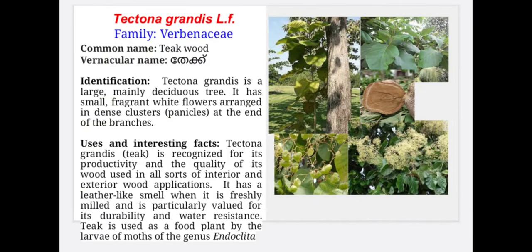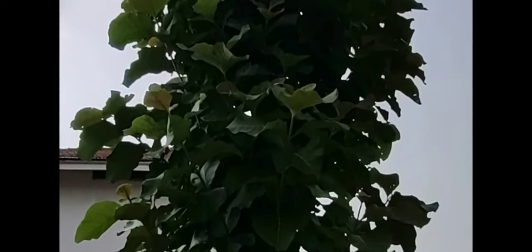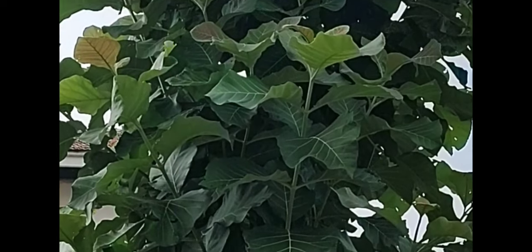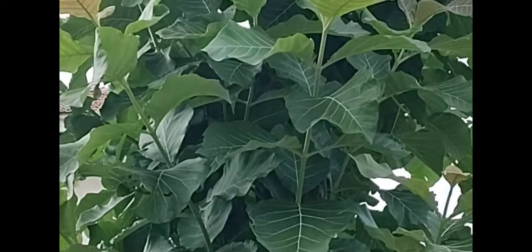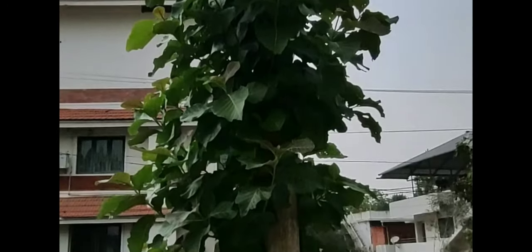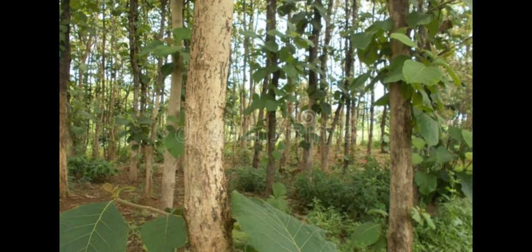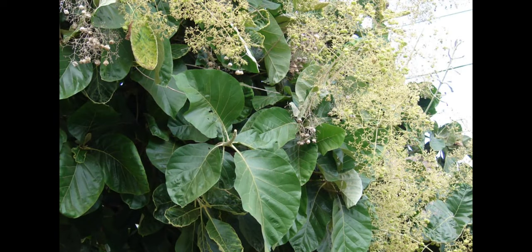Tectona grandis, family Verbenaceae. Common name is teakwood and Malayalam name is teak. Tectona grandis is a large, mainly deciduous tree. It has small fragrant white flowers arranged in dense clusters at the end of branches. Tectona grandis is recognized for its productivity and the quality of its wood, used in all sorts of interior and exterior wood applications. Teak is also used as a food plant by the larvae of moths of the genus Endoclita.